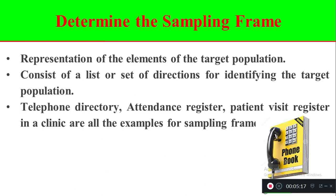Examples of sampling frames include the student attendance register, which contains student name, father's name, gender, and everything. Another example is the antenatal attendance register in a maternity clinic — whoever antenatal mothers are visiting, their names are enrolled. When you take that register, you get an idea of how many antenatal mothers are coming for checkup, and you can use those mothers for selecting the sample.